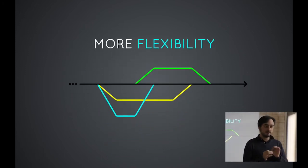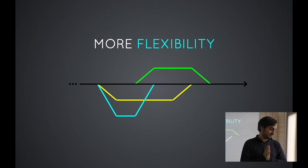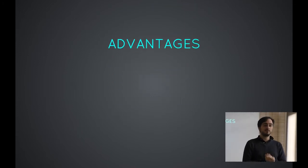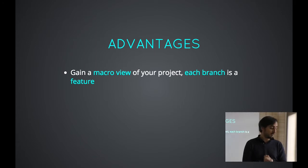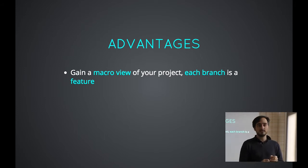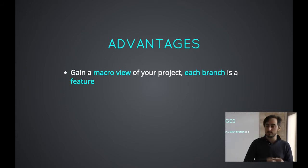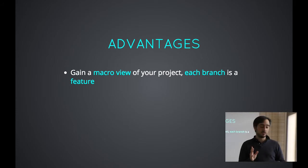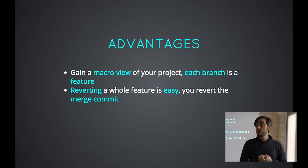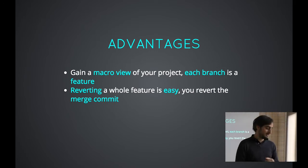Next: feature branches. It's the most common pattern you can use in your Git workflow. You can gain a macro view of your project because each branch corresponds to a feature. A tip: name your branches with something meaningful, especially if you're using GitHub tools or the command line, because the name of the branch will go into the merge commit. You can also revert a whole feature very easily — just revert the merge commit of the feature, and it automatically reverts all the changes that were in the commits.